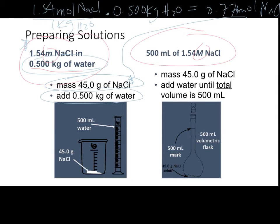We're going to be adding our mass of water. We know that the density of water is 1 gram per milliliter, so we could use a volumetric approach or use a scale to measure out the mass. We'll be taking 45 grams of sodium chloride and 500 grams of water — which, since the density of water is 1 gram per milliliter, is the same as 500 milliliters. We put the 45 grams of NaCl into a beaker, measure out 500 milliliters of water using a graduated cylinder, place it into the beaker, mix, and create our 1.54 molal NaCl solution.